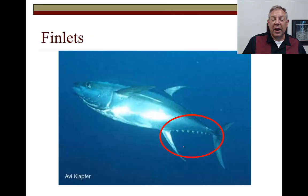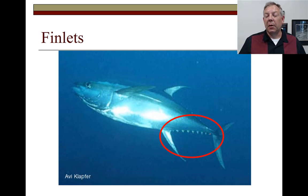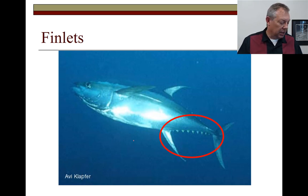In some species, you have finlets. In tuna, you've got these little small stiff fins running along the caudal peduncle, which help for hydrodynamic efficiency.